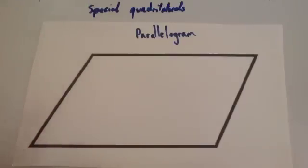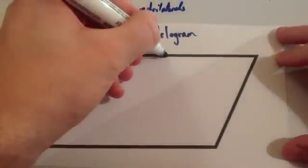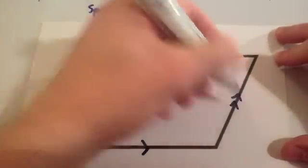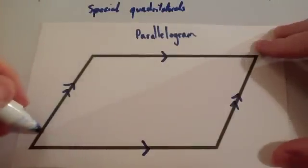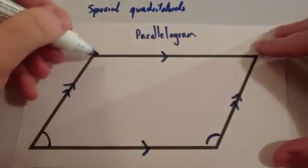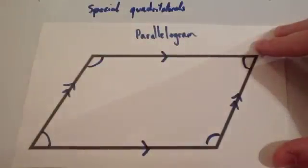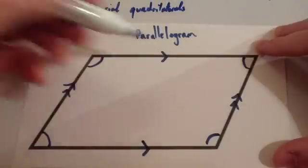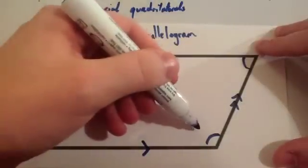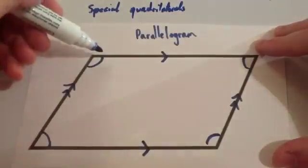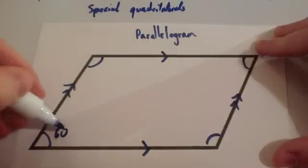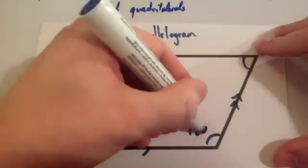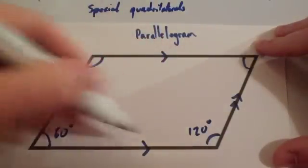Now let's look at some special quadrilaterals. Here's a parallelogram — the top is parallel to the bottom, and the two sides are also parallel to each other. In a parallelogram you have two sets of parallel lines, so you have co-interior angles. For instance, this angle and this angle will add to 180, and so will the other adjacent pairs. So in a parallelogram, adjacent angles add to 180 degrees. If one angle is 60 degrees, the adjacent angle is 120 degrees, because they are co-interior.